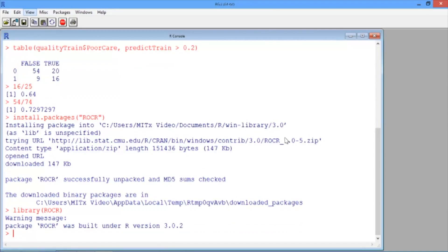Recall that we made predictions on our training set and called them predict train. We'll use these predictions to create our ROC curve. First, we'll call the prediction function of ROCR. We'll call the output of this function ROCRpred, and then use the prediction function.